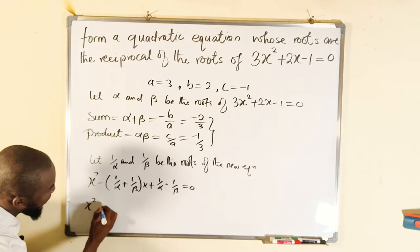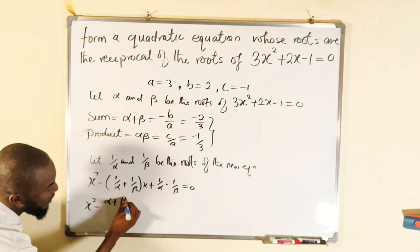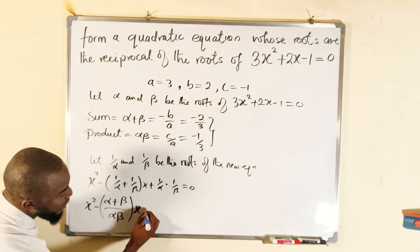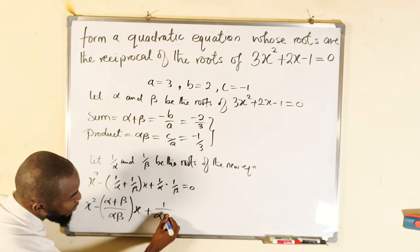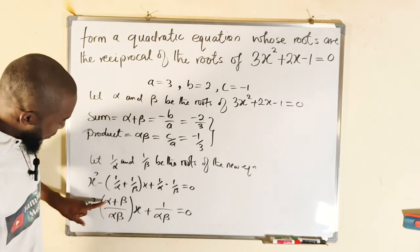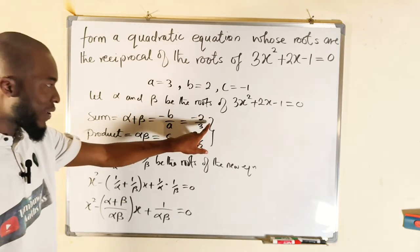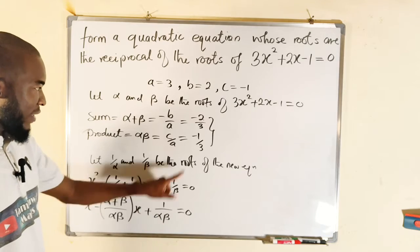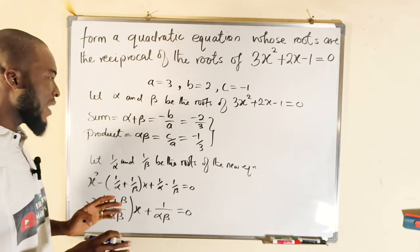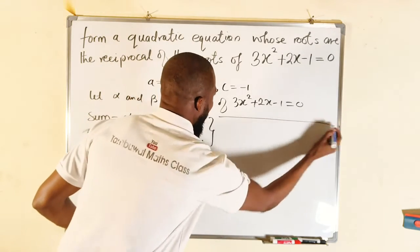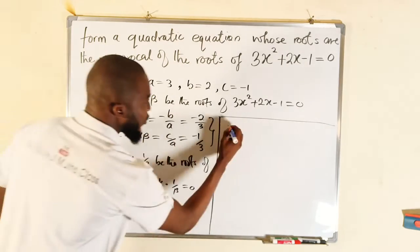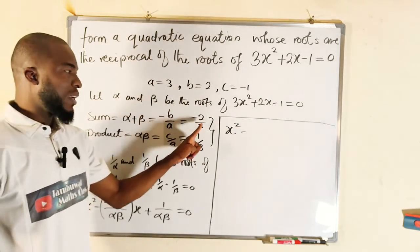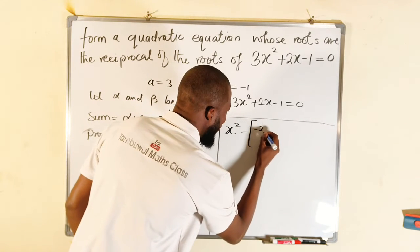Let's further simplify. This gives us x squared minus — if you add 1 over alpha plus 1 over beta, you get alpha plus beta divided by alpha times beta — multiplied by x. Then the product 1 over alpha times 1 over beta gives 1 over alpha beta. But already alpha plus beta is negative 2 over 3, and alpha times beta is negative 1 over 3. So we have negative 2 over 3 divided by negative 1 over 3, and 1 over the product.